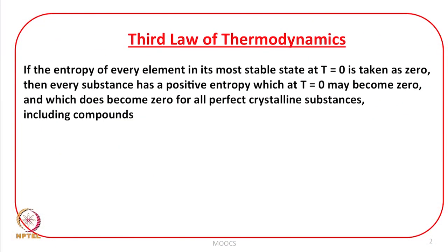Let us look at the formal definition of the third law of thermodynamics. It states that if the entropy of every element in its most stable state at T equal to zero is taken as zero, then every substance has a positive entropy which at T equal to zero may become zero, and which does become zero for all perfectly crystalline substances including compounds.